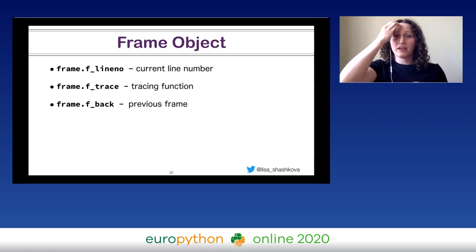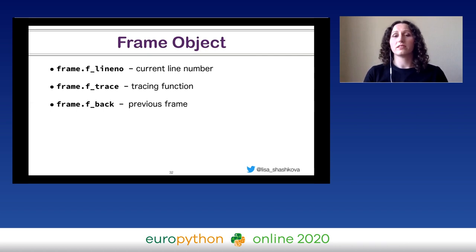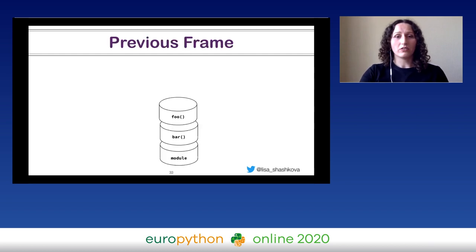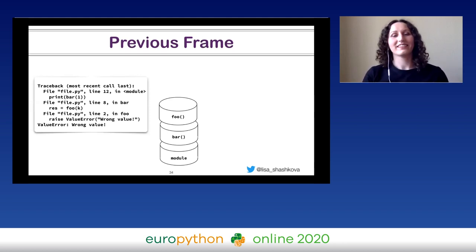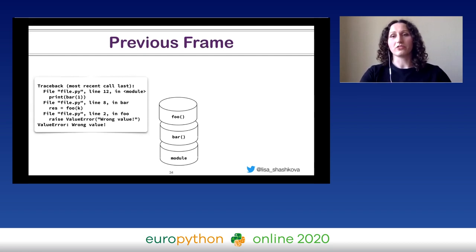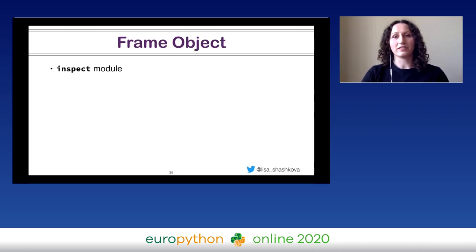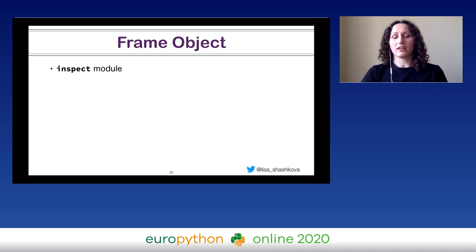Let's return to the frame object. In addition to the code object, it also contains the current line number being executed in your program, a link to the tracing function which we'll discuss later, a link to the previous frame, and a lot of other things. Talking about the previous frame — as you remember, our frames are stored in a stack-like data structure, and it is very useful, for example, to print a traceback when some exception appears in your code. You've probably seen this many times — Python shows you a beautiful traceback text, and the link to the previous frame is the exact thing which helps the Python interpreter print this information for you. There is also the built-in module inspect, which has many functions for inspecting frame objects and your program scope.